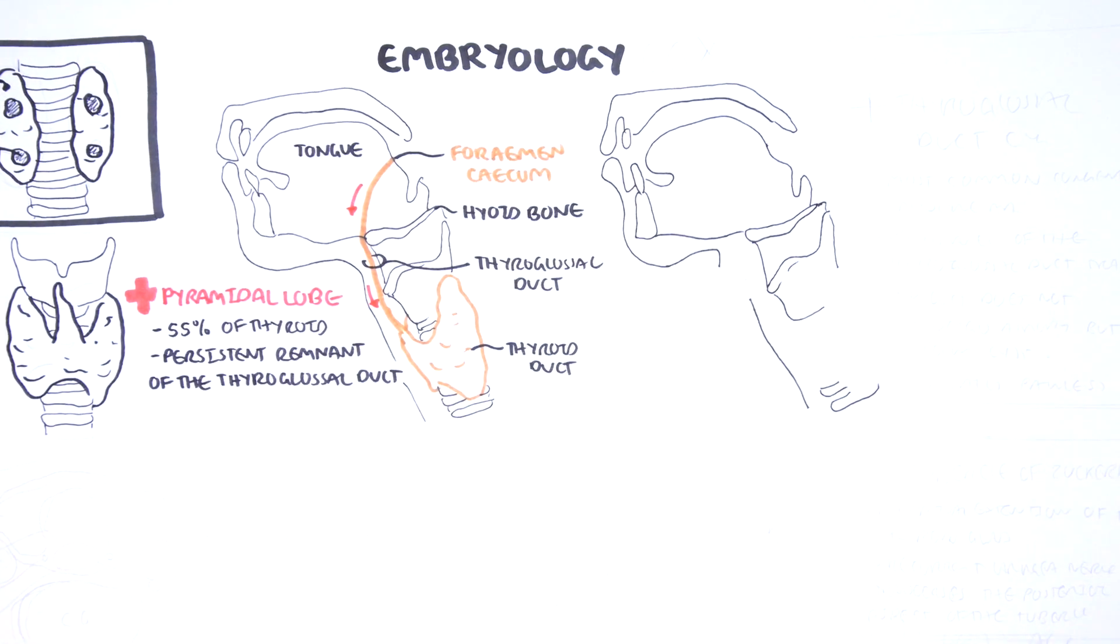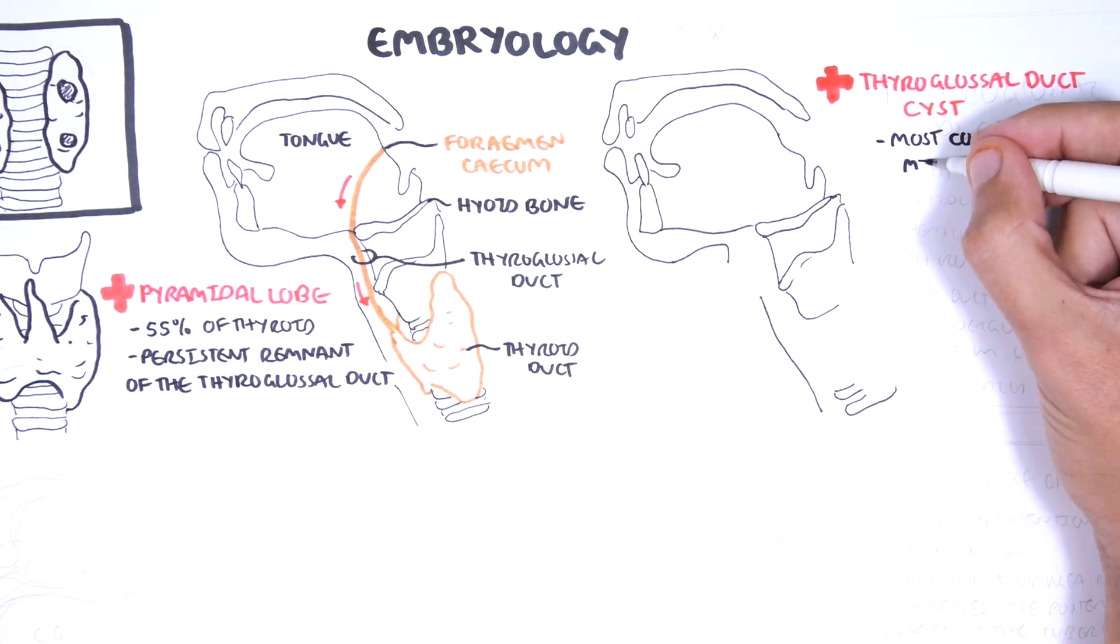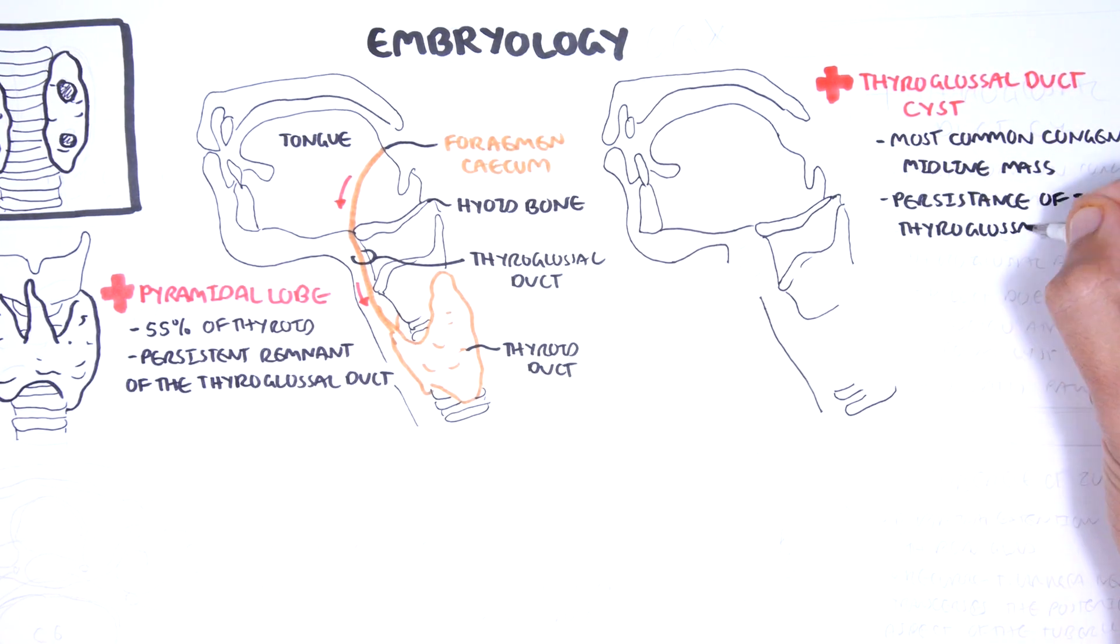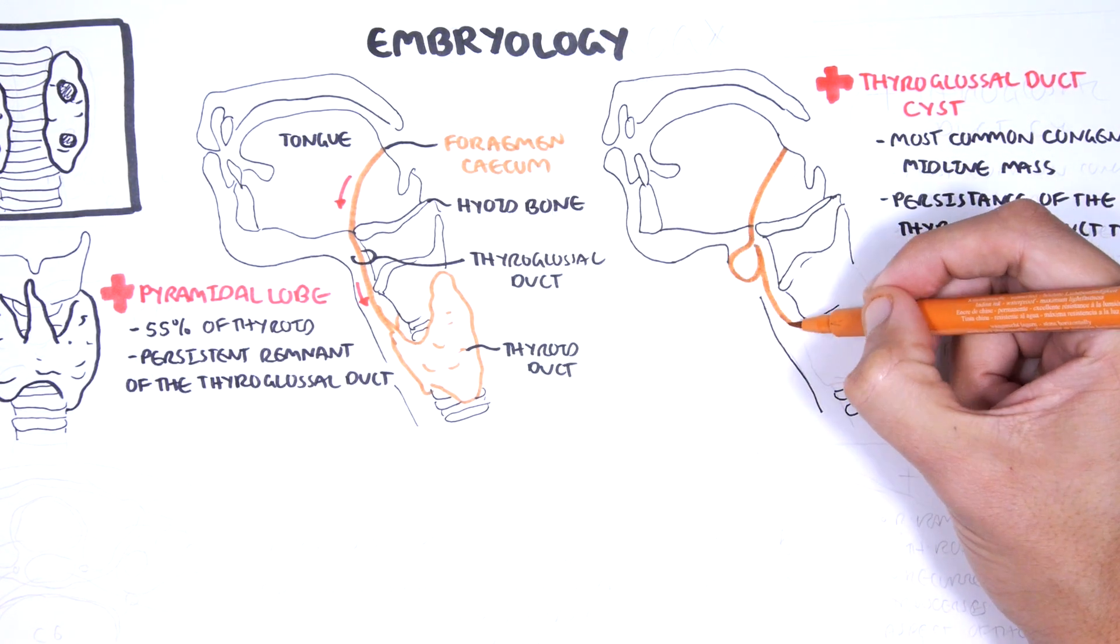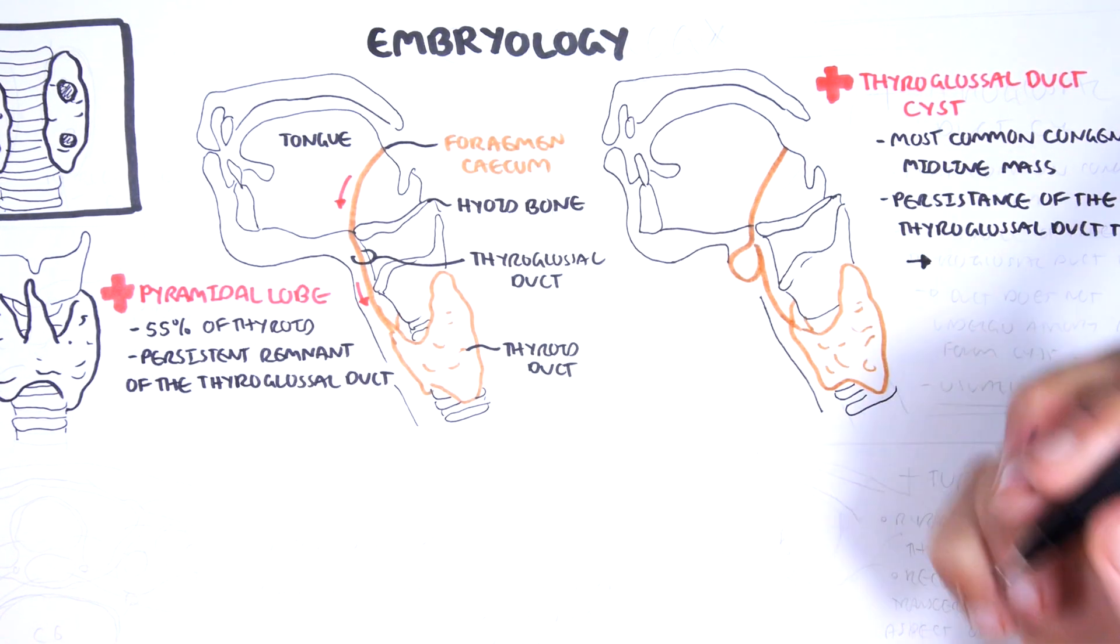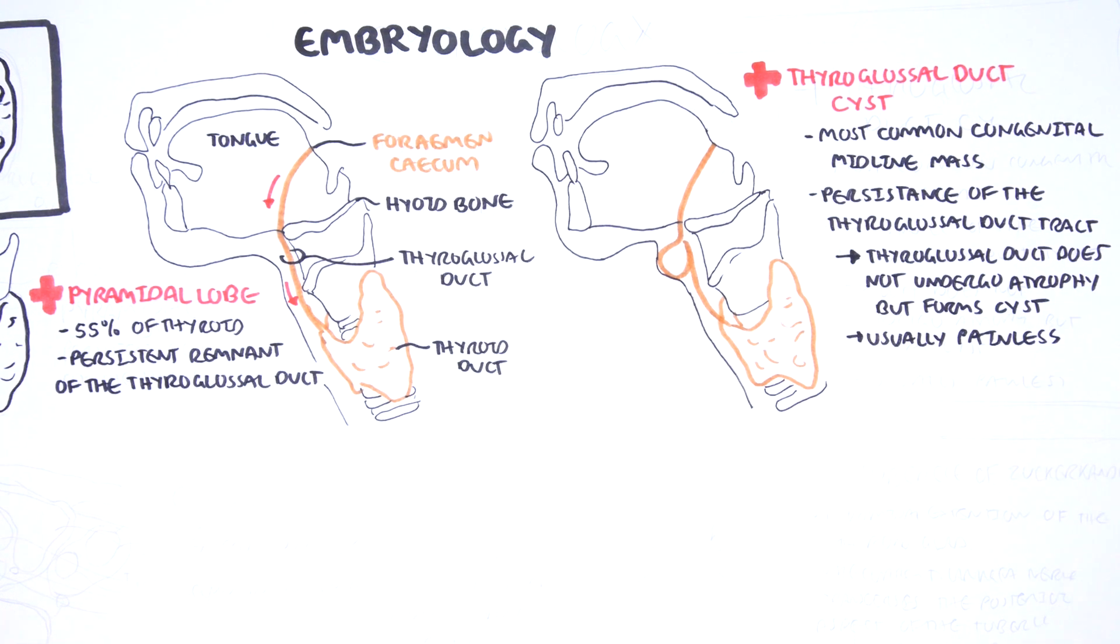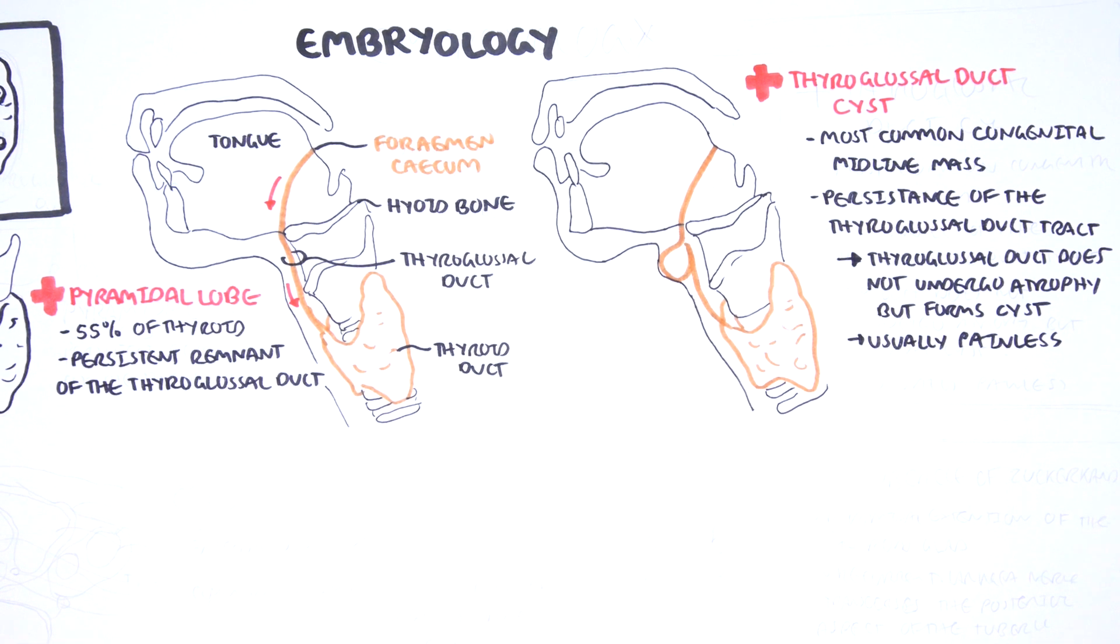The thyroglossal duct cyst is a common congenital midline mass caused by the persisting thyroglossal duct tract. The thyroglossal duct tract does not atrophy, but forms a cyst instead. The cysts are usually painless unless infected.